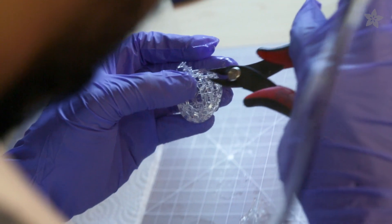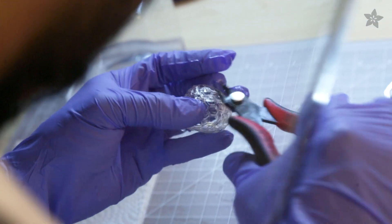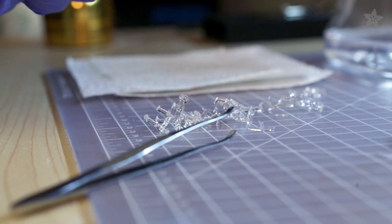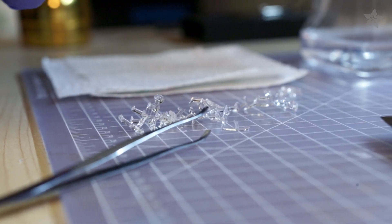You want to take your time, especially when cutting complex structures. If you have support structures inside of your model, you can use tweezers to hold them in place while snipping them into smaller bits.